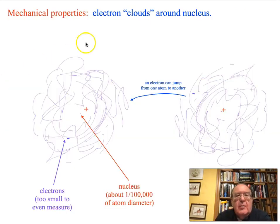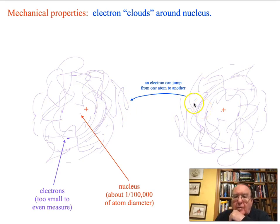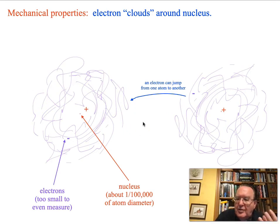An atom has an electron cloud around it. If you have two atoms nearby, it may be that in the atom on the left there's a quantum state at a lower energy than the atom on the right. So an electron can jump across from one atom to another — if the atoms are close enough, the electron just jumps across. It lowers the energy, and that's why it's preferable. Having done that, these two atoms attract each other and make a molecule. The attractive force between them governs what kind of material it is — whether it's a crystal or just a gas.